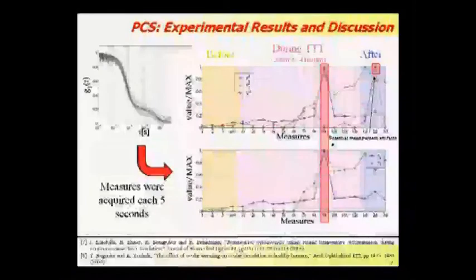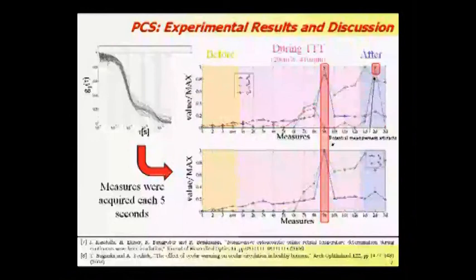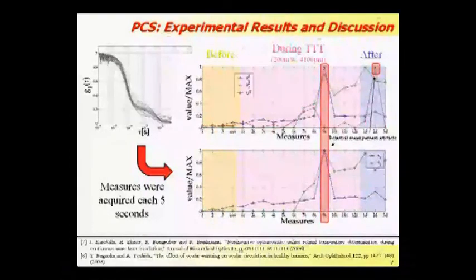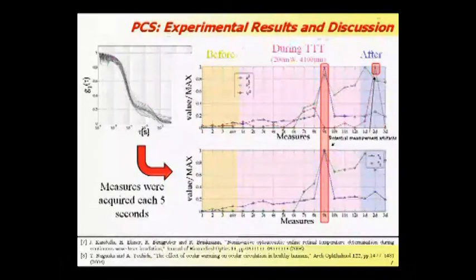Some research reports a flow increase aimed to remove the exceeding thermal energy. However, a recent human study reports a flow reduction caused by vasoconstriction. Our measure agrees with both these phenomena. After an initial increase in the V-square value, which agrees with the flow increase aimed at thermal removal, we have a subsequent decrease in the V-square value, probably due to the thermal-induced vascular restriction.